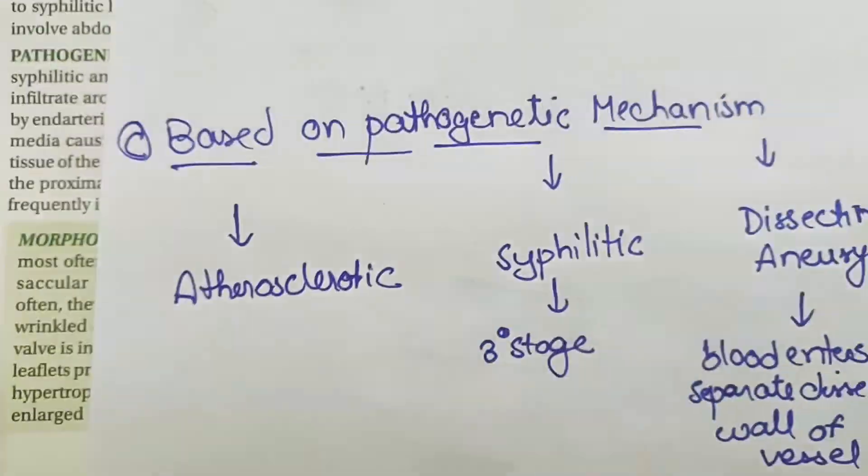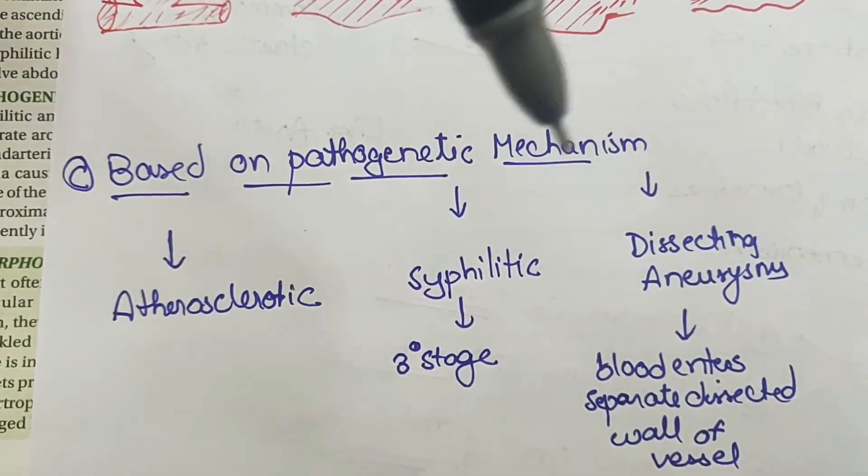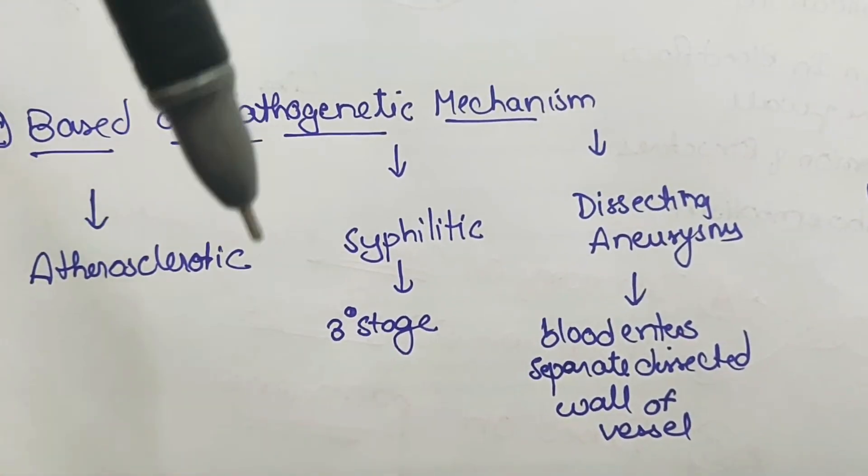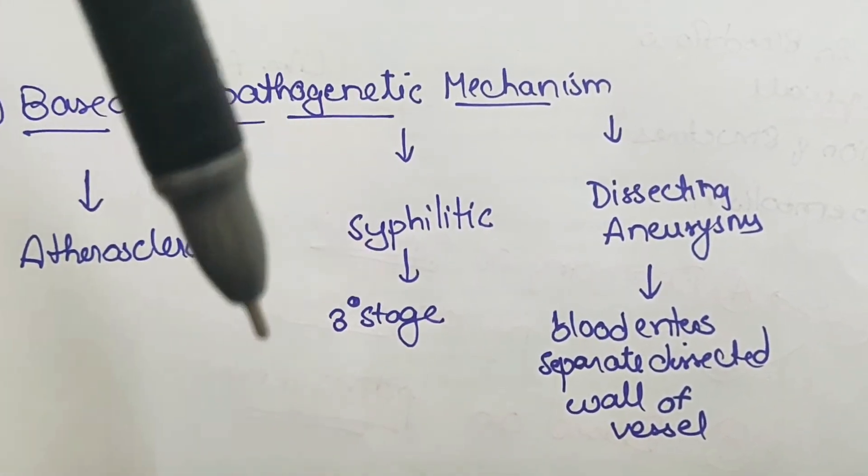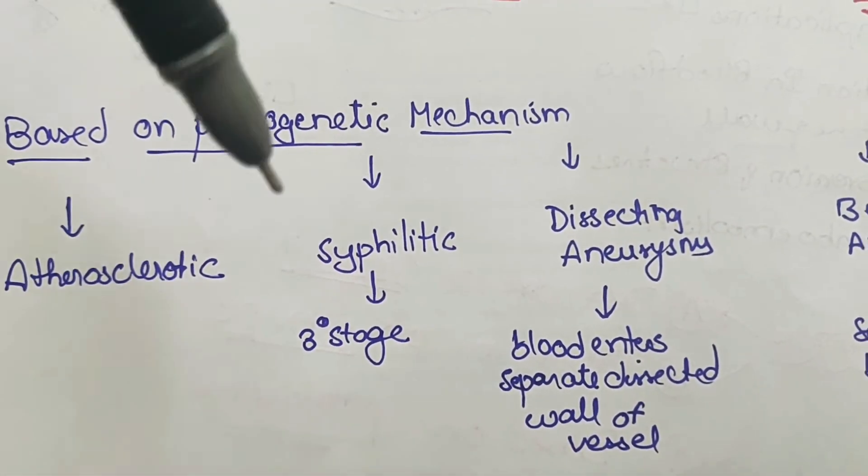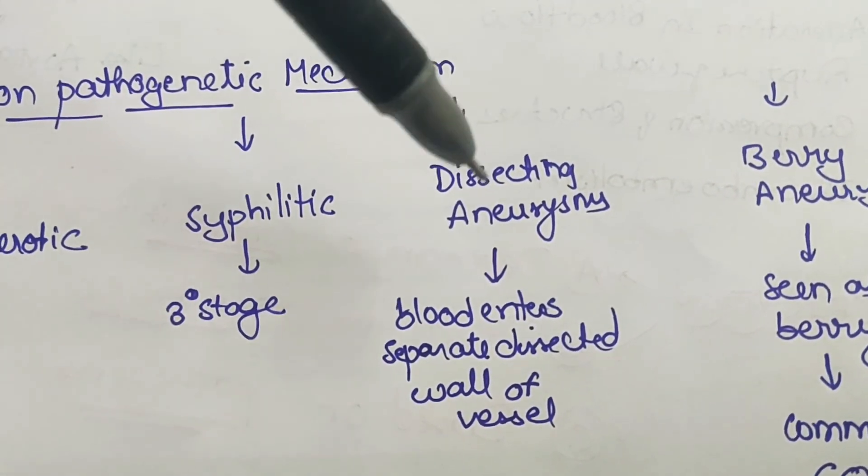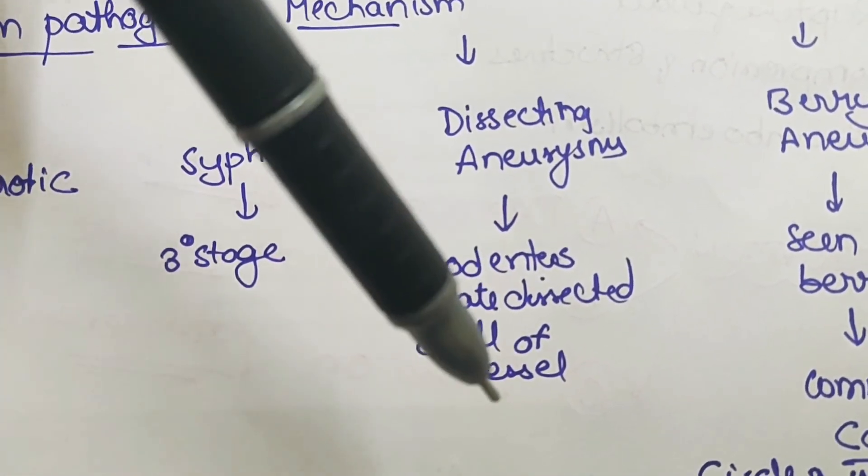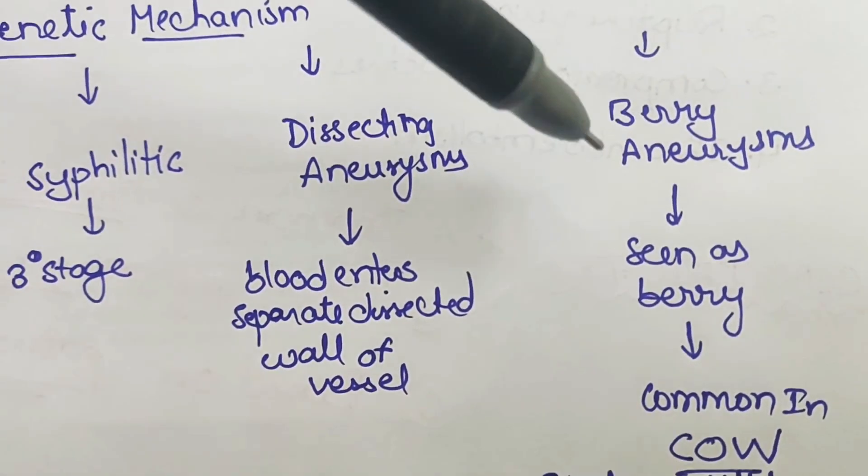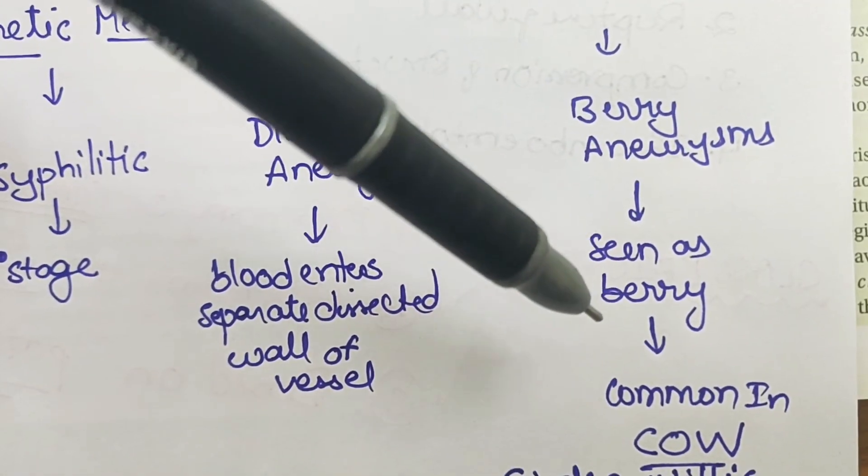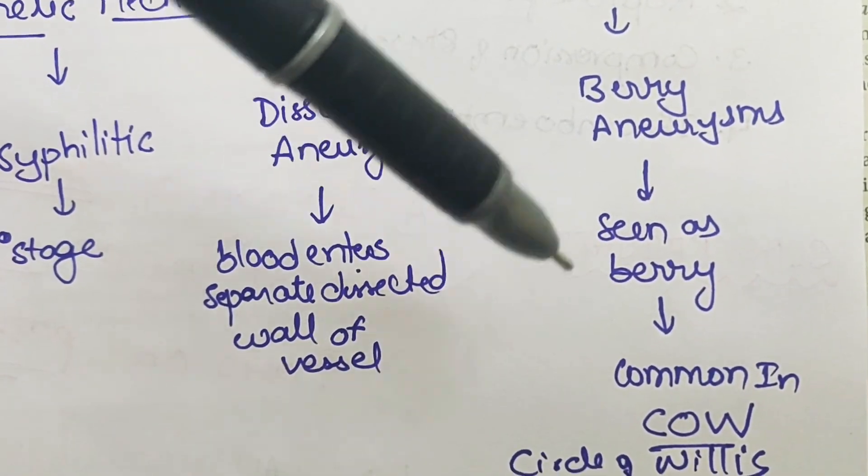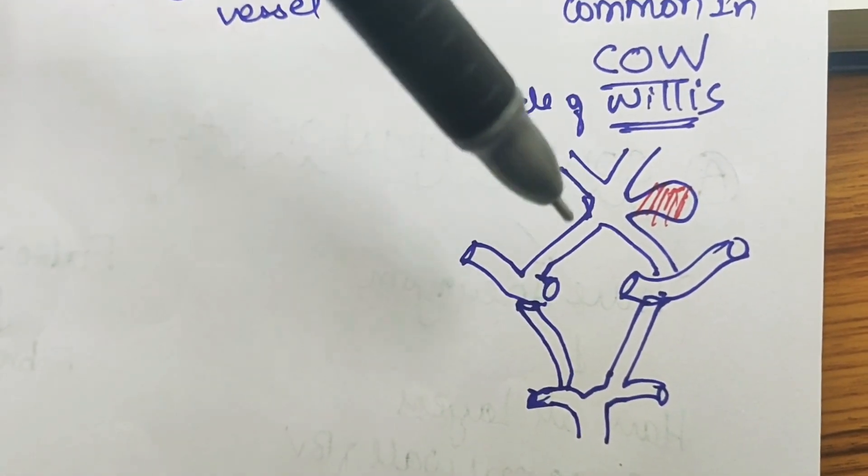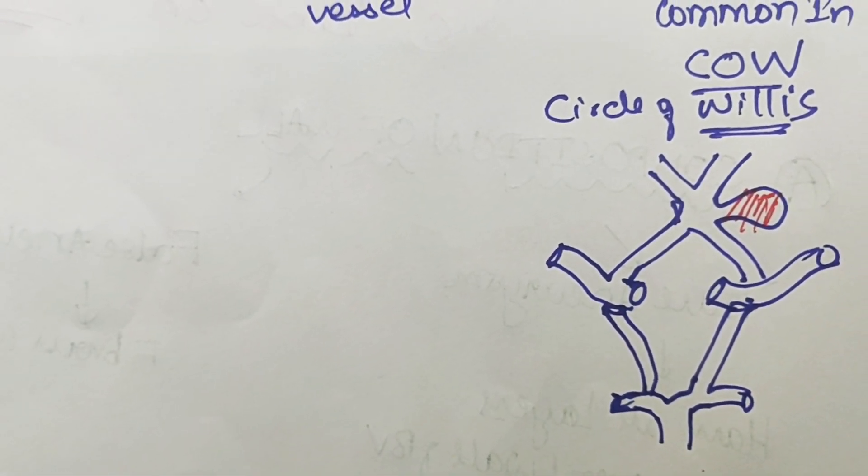Based on the pathogenetic mechanism, it can be atherosclerotic due to atherosclerosis, or syphilitic during the tertiary stage of syphilis. There is a specific dissecting aneurysm in which the blood enters the separate dissected wall of the vessel. We will discuss this in detail later. In berry aneurysm, it has a berry-shaped dilation commonly seen in the circle of Willis.